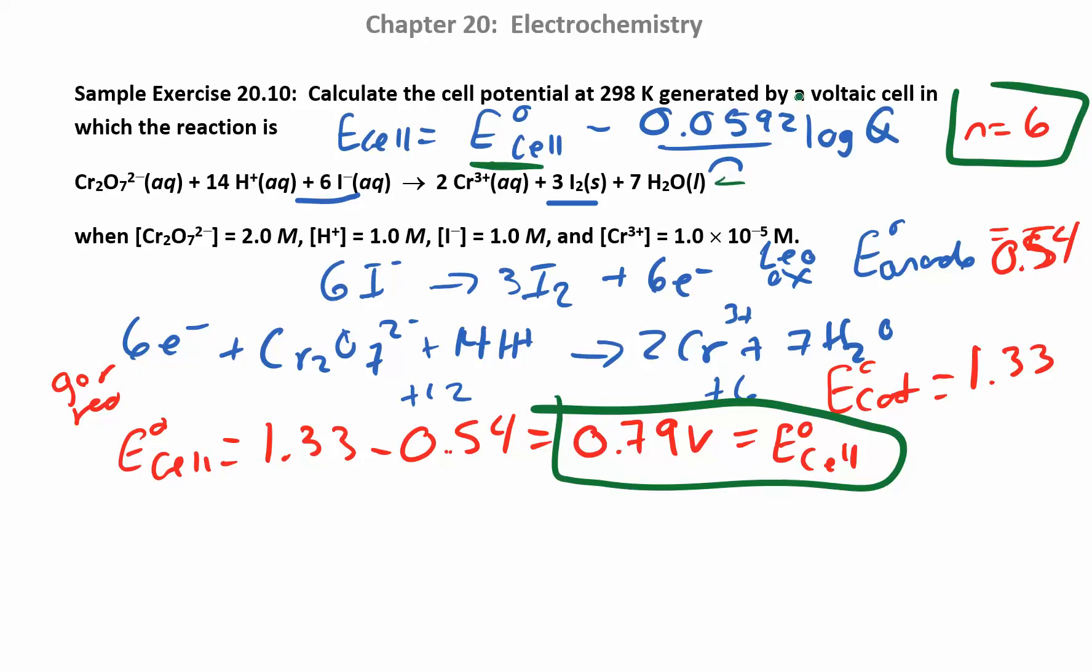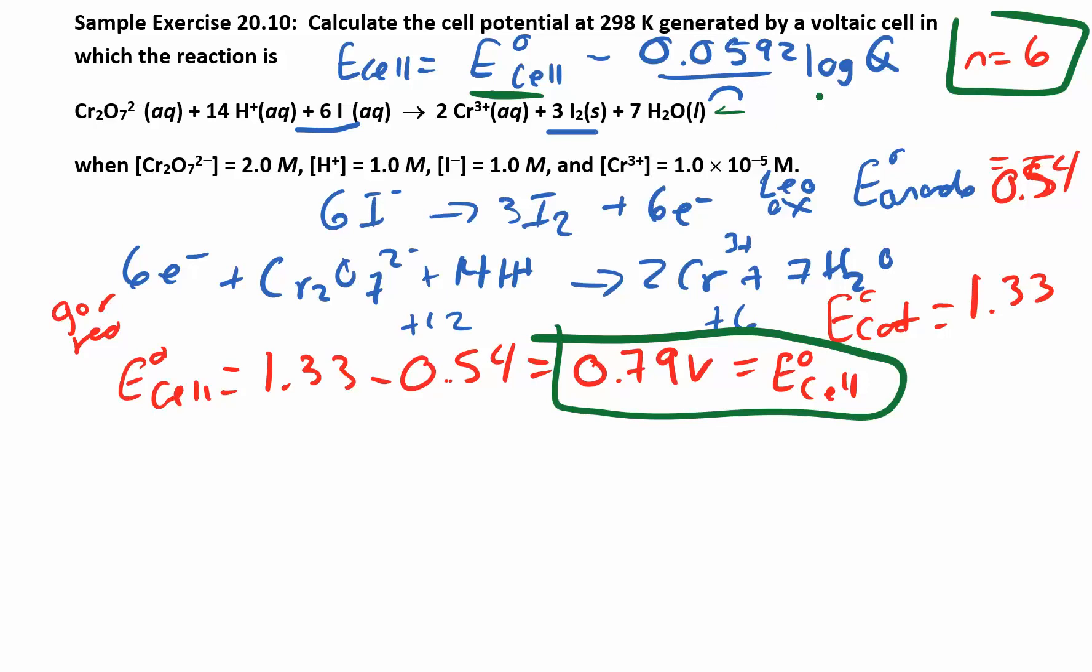This is the new part that we're adding. We're under non-standard conditions, so we have to set up our Q expression. Products over reactants raised to the stoichiometric coefficients. Products are over here. I have chromium and I have two of those, so I'm going to square that. Solid, liquid, I don't have to worry about them. Over products over reactants. Here I have Cr₂O₇²⁻. Make sure you have this reaction balanced. That's going to matter. Raised to the 14, and I⁻ raised to the 6. So I did products over reactants. I didn't worry about the solids and the liquids.